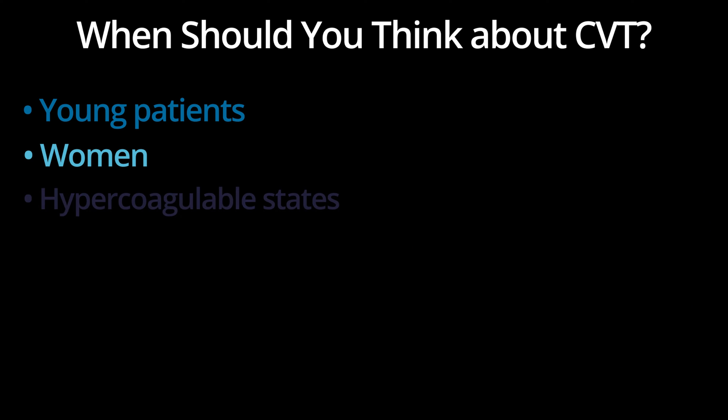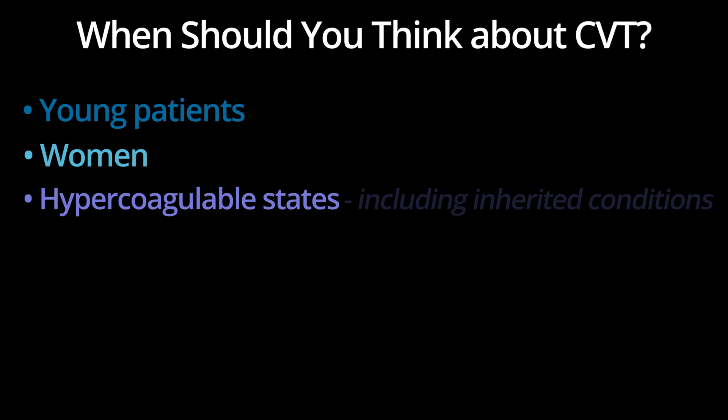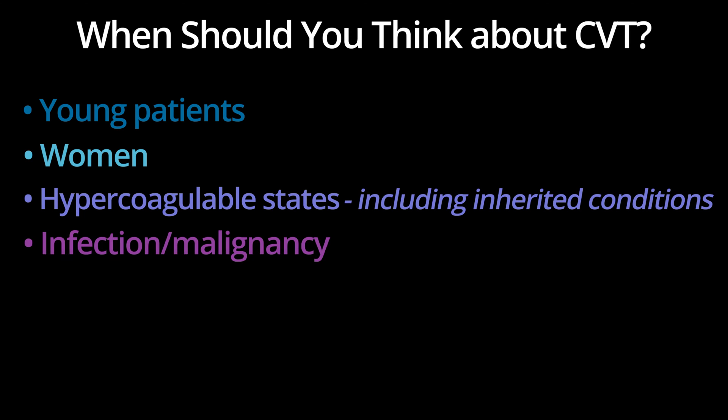Also, think about CVT in anyone with an increased risk of clotting, including those with inherited prothrombotic conditions such as factor V Leiden. Anyone with infection or malignancy has an increased risk. If you're reading a case of sinusitis or mastoiditis or any infection, make sure to closely evaluate the surrounding dural sinuses and veins for thrombosis. This is particularly true in children — in fact, over 50% of cases of CVT in children are secondary to infection.